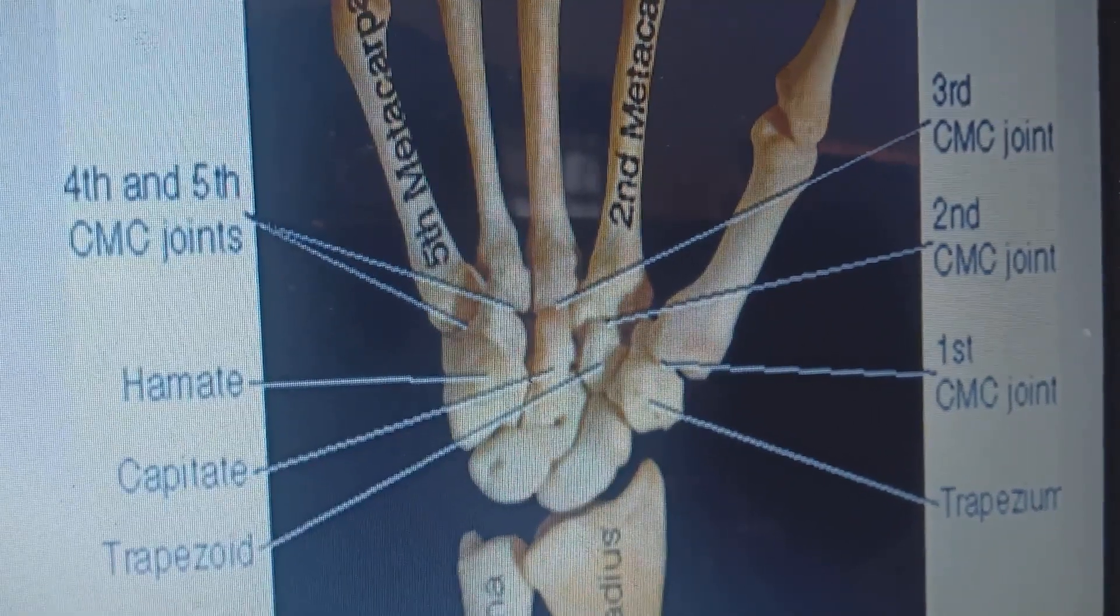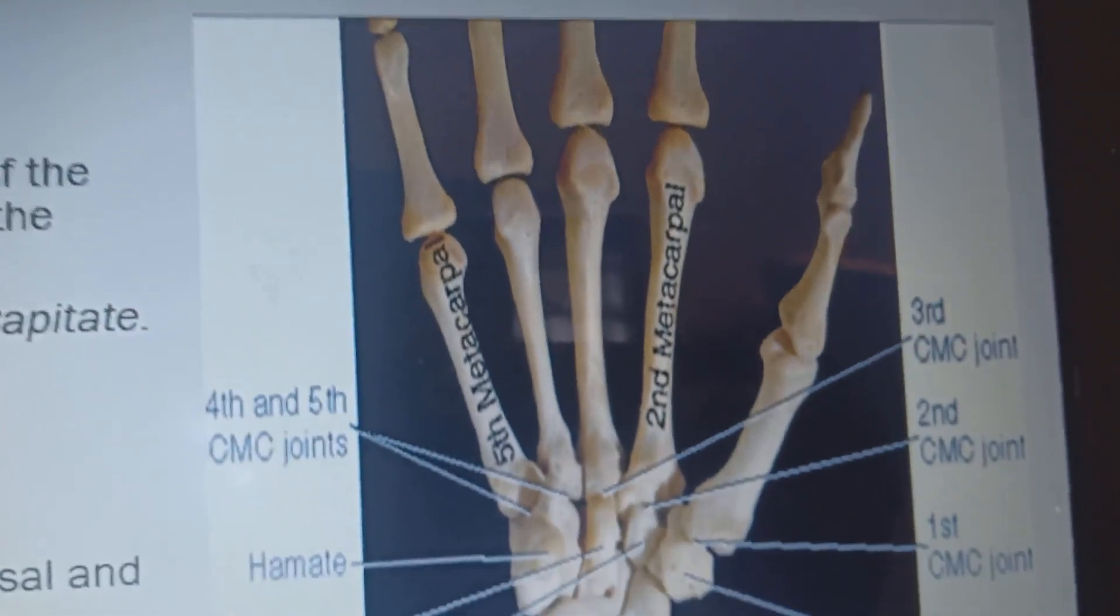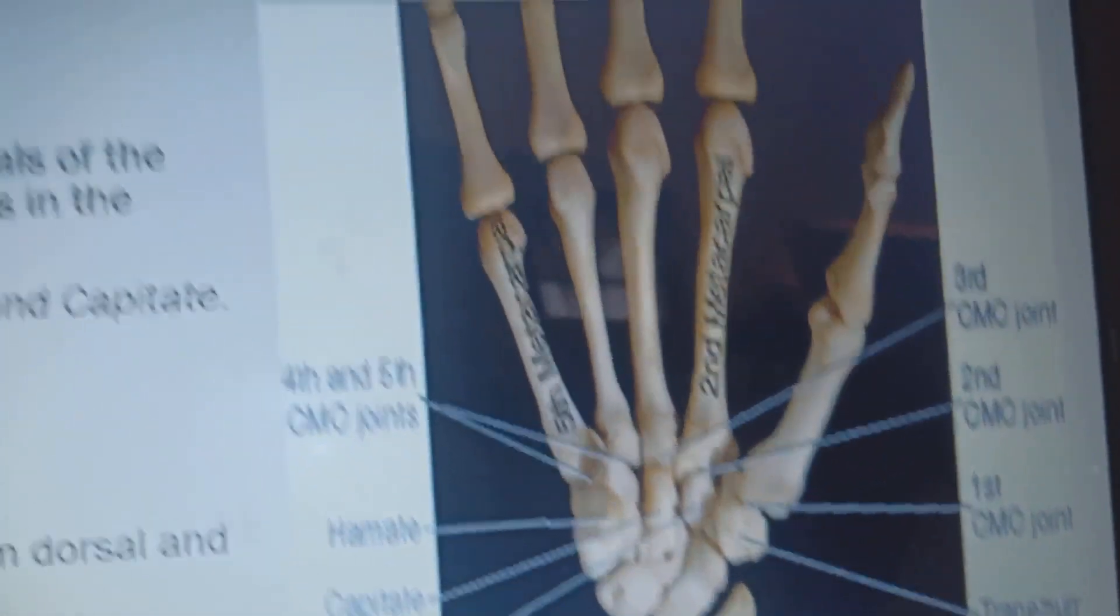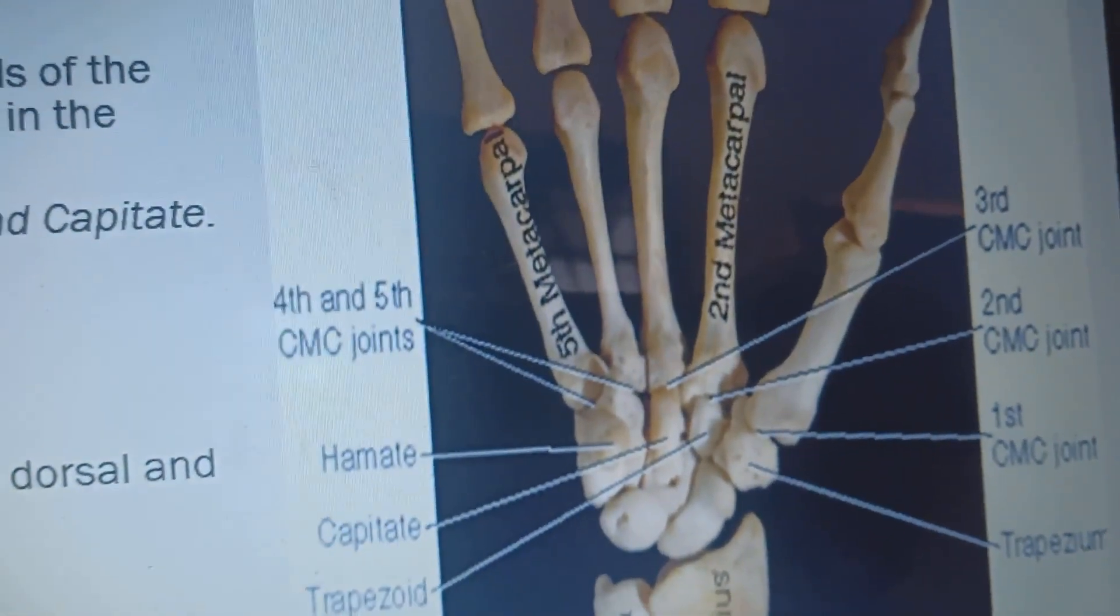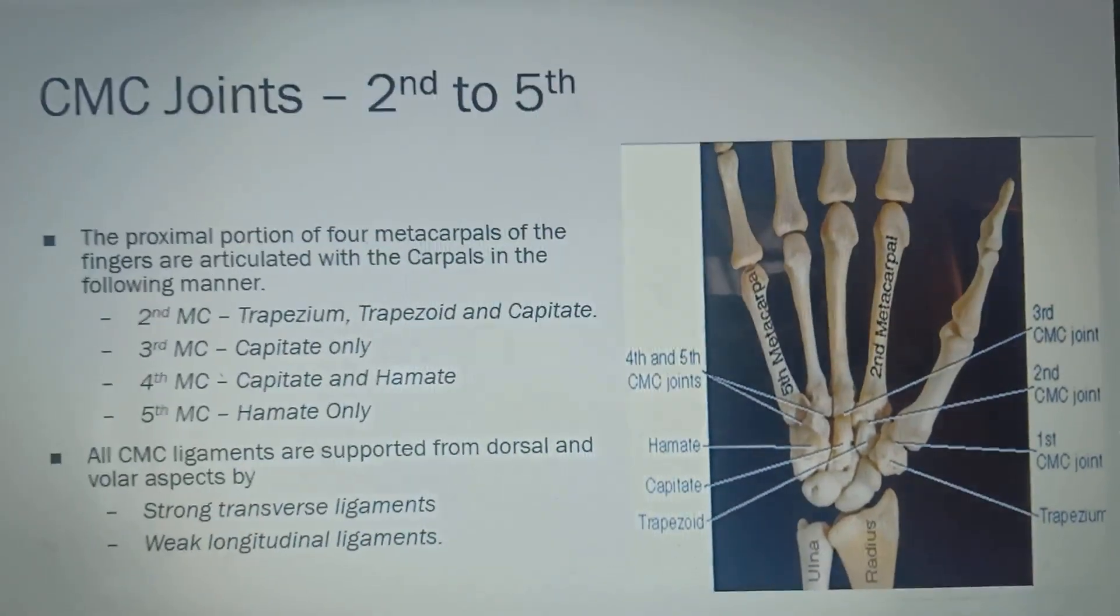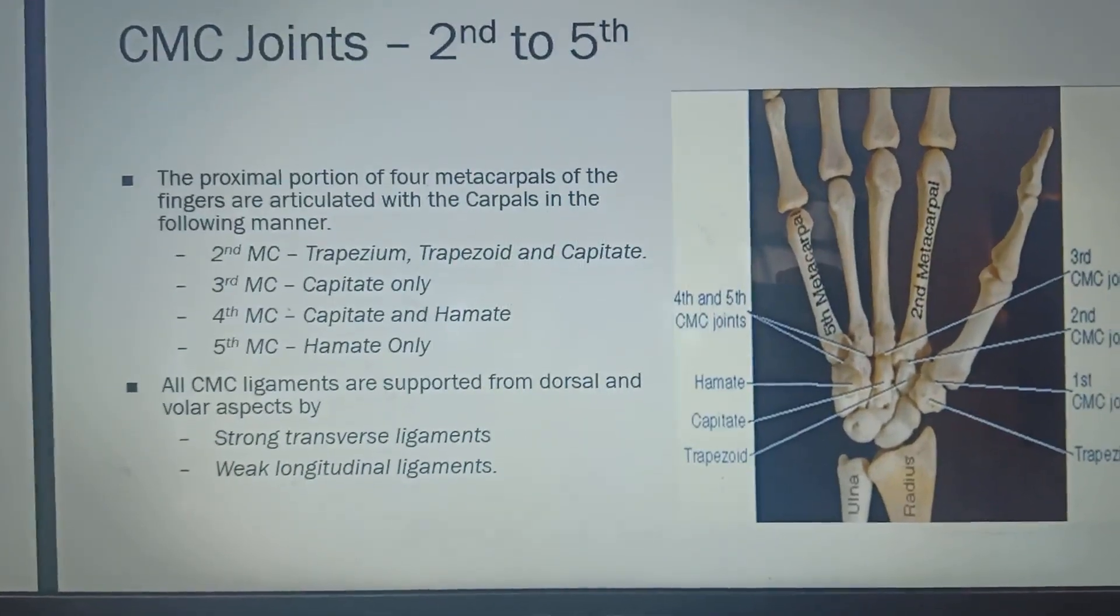Whereas, your 3rd one is just in the connection with capitate and 4th and 5th, 4th is connected with the capitate and hamate and 5th is connected with the hamate only. All CMC ligaments are